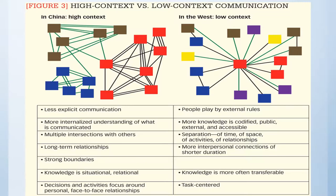Here's a visual for thinking about communication in high context versus low context cultures. The chart gives us China as an example of high context: less explicit, more internalized understanding of what is communicated, multiple intersections with others, long-term relationships, really strong boundaries meaning those groups are very close-knit. Knowledge is situational and relational — what you know is based on who you know and the areas of society you have access to. Decisions and activities focus around personal face-to-face relationships, which underpins the idea that relationships within high context cultures are very long-term and stable. In a low context or Western culture, people pay attention to external rules and processes. There's a process for how you get a job, whereas in some places the jobs you have are based on who you know. More knowledge is codified, public, external, and accessible. There is a separation of time and space of activities — we get up at a certain time, go to bed at a certain time, dinner is at a certain time. Time is very much a way in which we structure our day and compartmentalize our activities. More interpersonal connections of shorter duration — we're in contact with many people, but those relationships may not be long lasting.